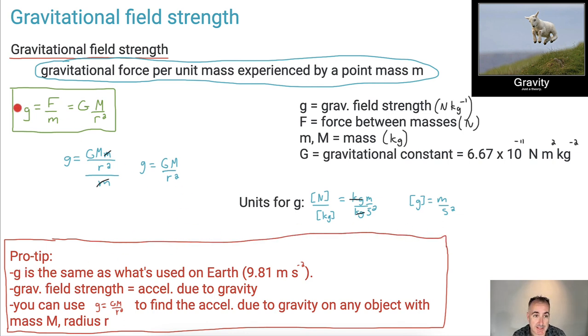First of all, g, this little g here that we just found, it is the same as what's used on Earth. So this is 9.81 meters per second squared. So why don't we use 9.81? Well, that's because that only works on Earth, at the surface of Earth.